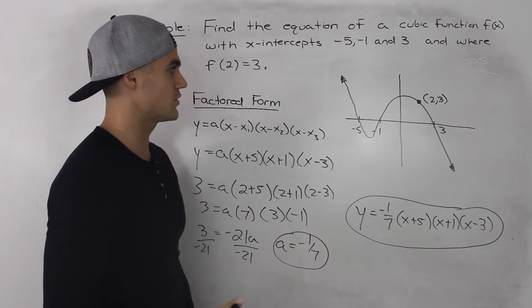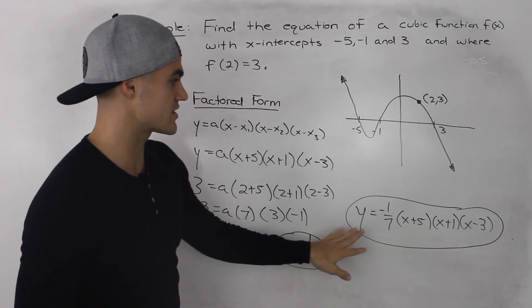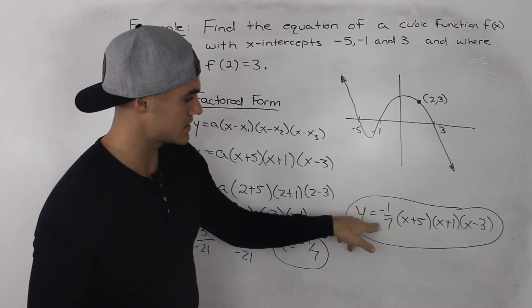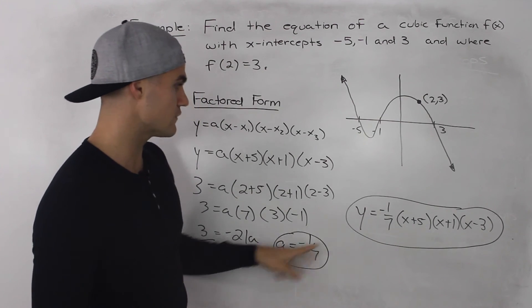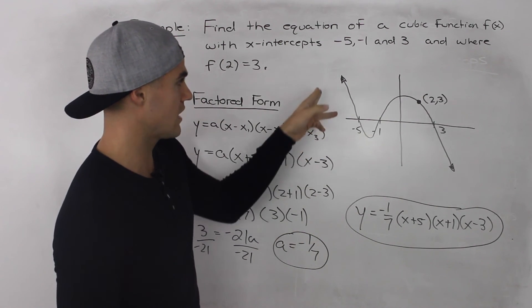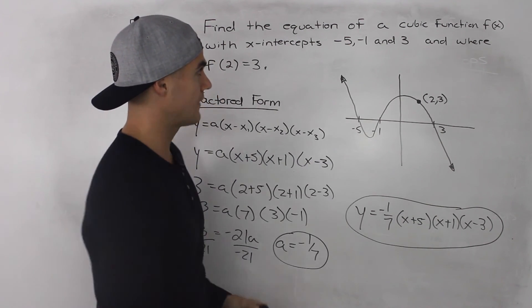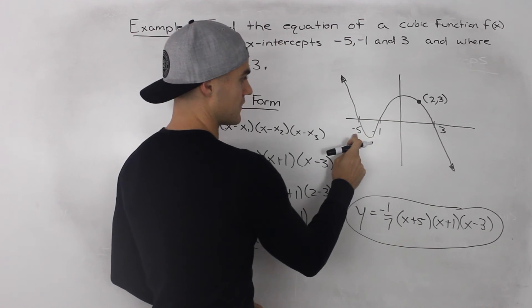Now let's show this graphically so you can better understand it. So this is a cubic function, so an odd degree. And if you were to expand this, because this a value is negative, it'll have a negative leading coefficient. So the end behaviors will be from quadrant 2 to quadrant 4. And then it's going through these x-intercepts of -5, -1, and positive 3.